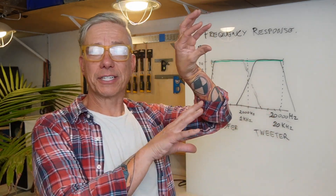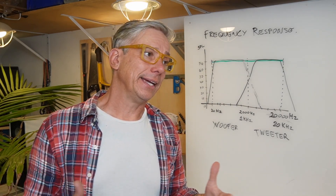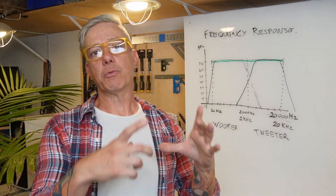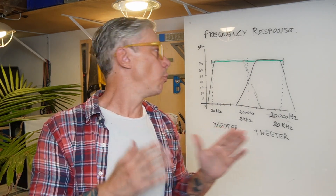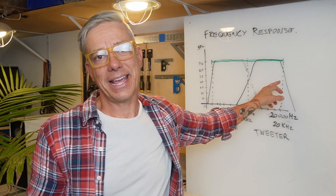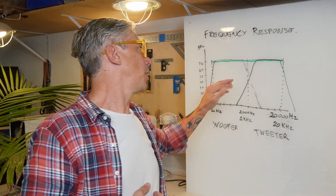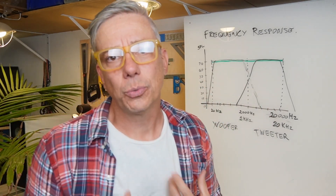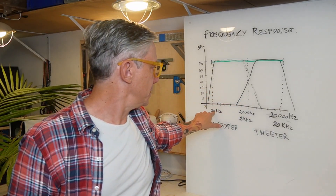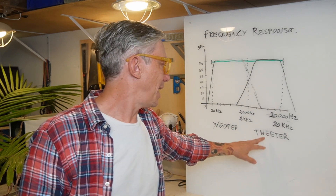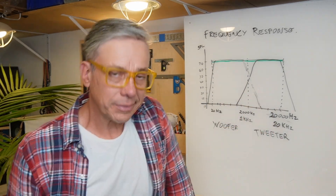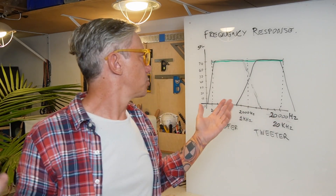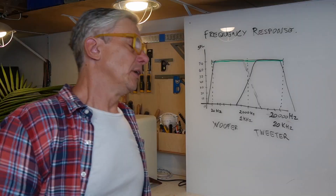A woofer won't perform well in the high frequency region, and a tweeter won't perform well in the low frequency region — it will likely blow or melt. So how do we filter those frequencies? We don't want low frequencies going to the tweeter and we don't want high frequencies going to the woofer. That's what a crossover — a frequency divider or frequency separator — does.